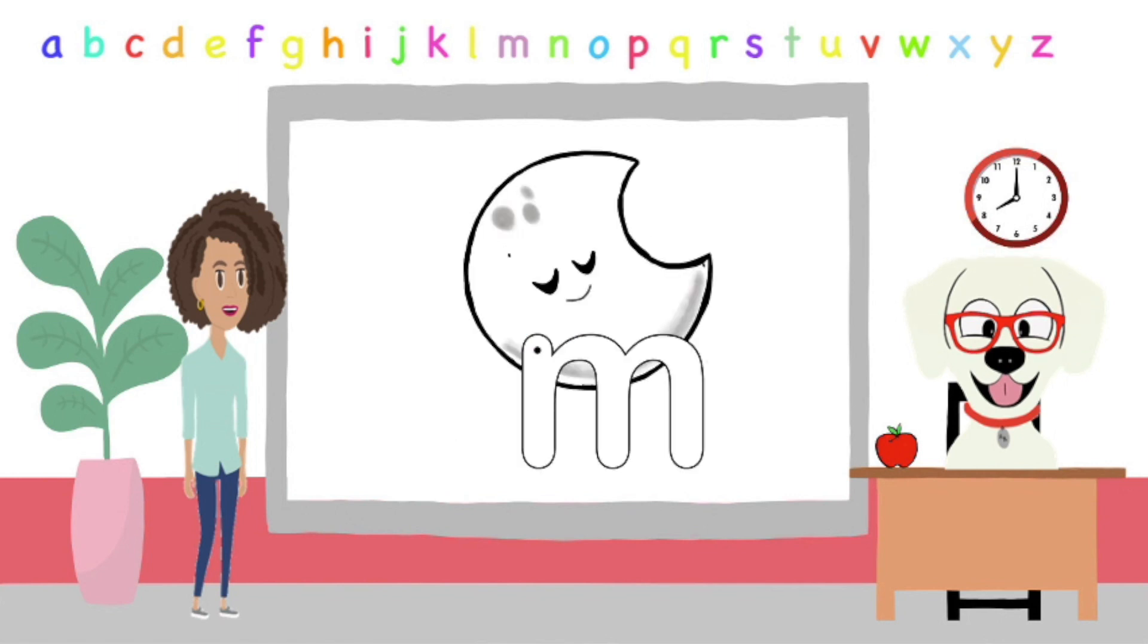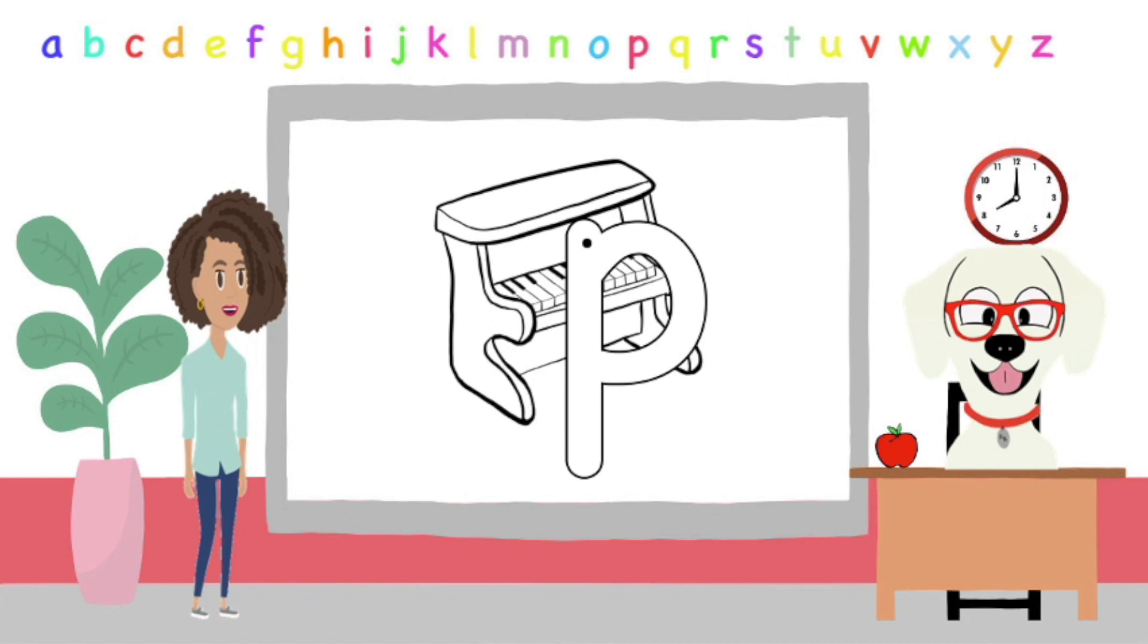This is the letter M for M, M, Moon. Can you write the letter M for Moon? Next, we have the letter P for P, P, Piano. Draw the letter P for P, P, Piano.